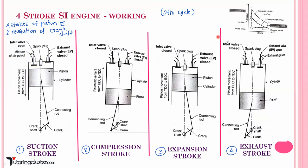This is represented as process 0 to 1 on the Otto cycle diagram, where pressure is on the Y-axis and volume is on the X-axis. You should remember the name — it is the Otto cycle. So 0 to 1 is showing the suction stroke.